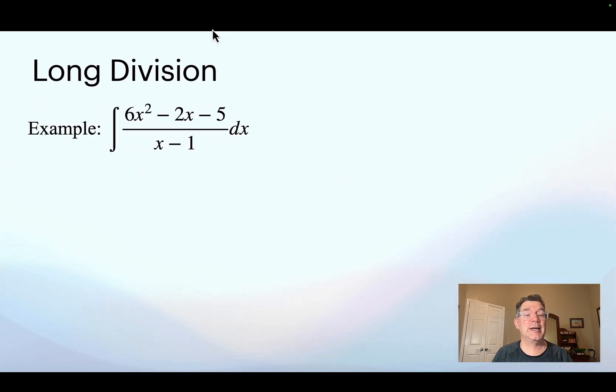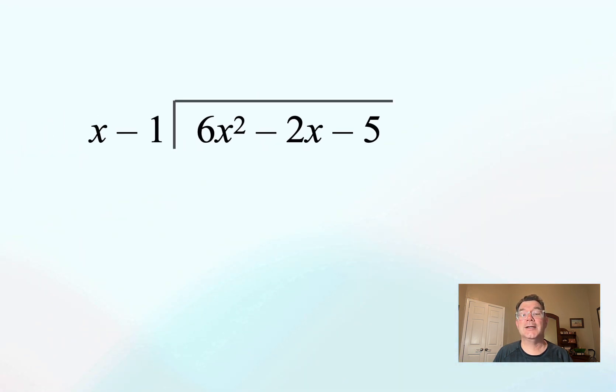So let's look at an example. I've got 6x squared minus 2x minus 5 over x minus 1. So I'm going to actually use long division to write that in another way. To do that, I look at the x at the beginning and the 6x squared at the beginning of the inside and I notice that x goes into 6x squared 6x times. And so I write that at the top.